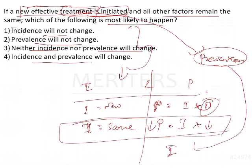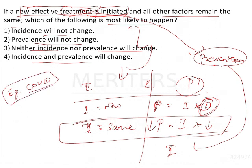Here they are saying effective treatment is initiated. So the duration of treatment is reduced, automatically prevalence will get reduced. I will give one example to easily understand. For example, COVID. We know that very recently it affected us. If an effective treatment for COVID is initiated, what will happen?